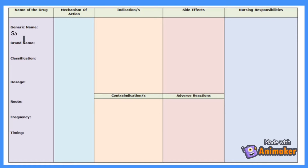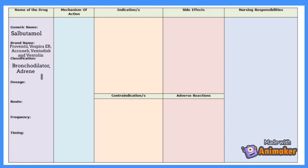Let's use salbutamol as an example. Salbutamol is the generic name. Its brand names include Proventil, Ventolin ER, Acuneb, Ventodisc, and Ventolin. It belongs to the family of bronchodilators and adrenergics. Dosage is 1 nebule, route is inhalation, and frequency is Q6 hours.